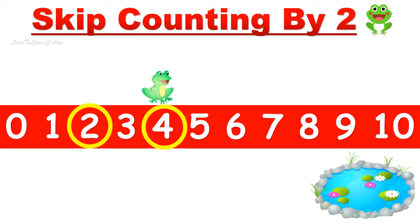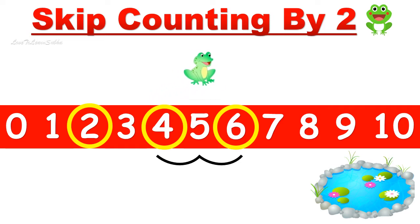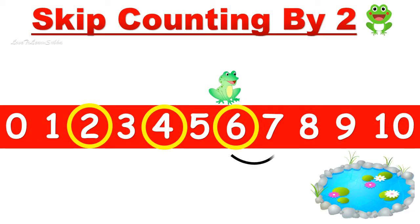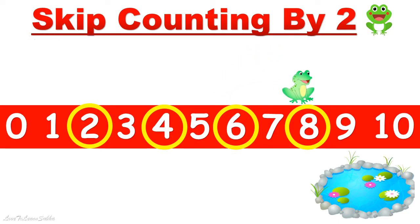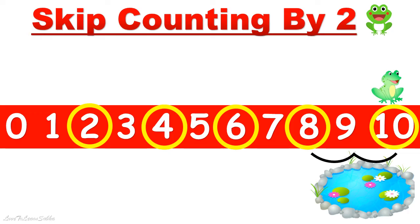Again he has to skip count by two to move forward: one, two — the number is six, so the toad jumps on number six. Again moving two steps: one, two — the number is eight. Once more: one, two — the number is ten, so the toad jumps on number ten and reaches the pond.